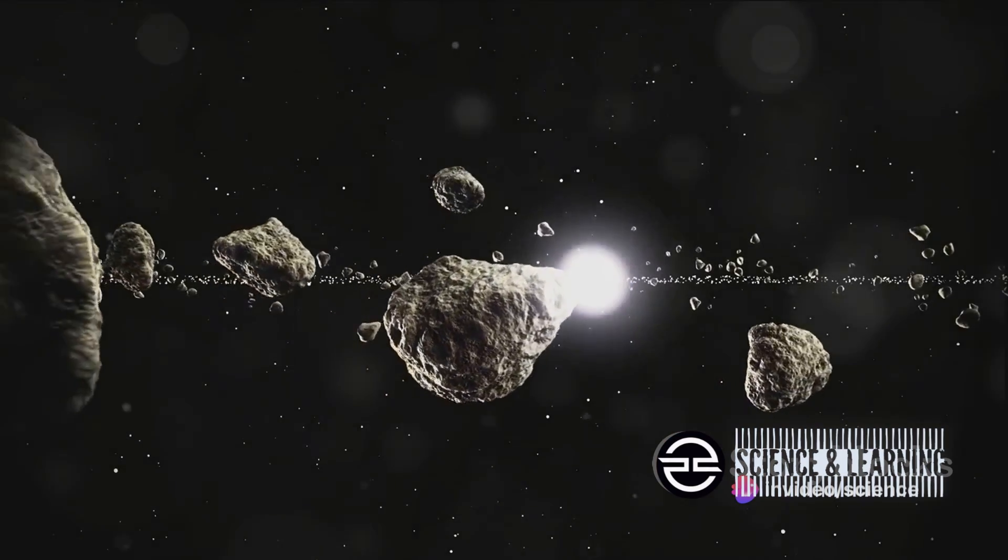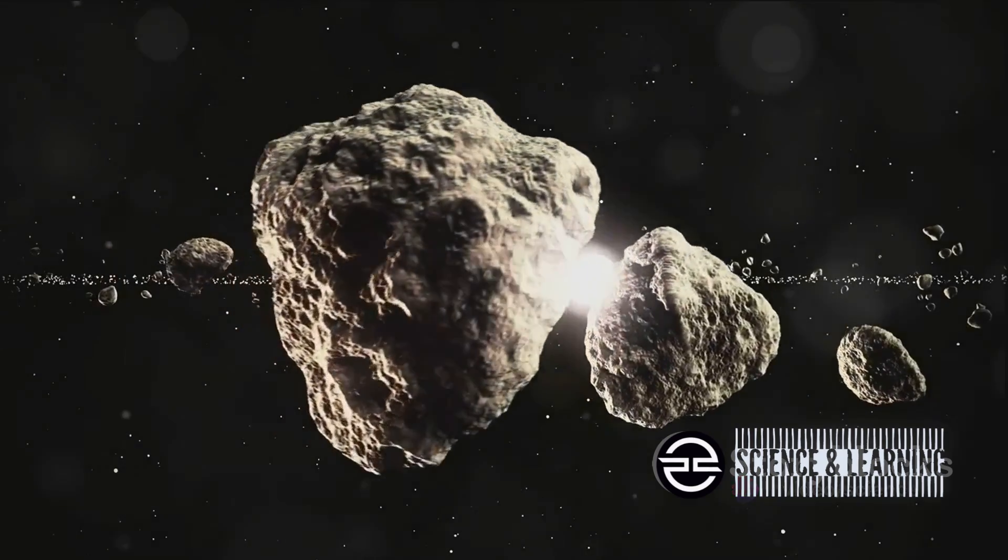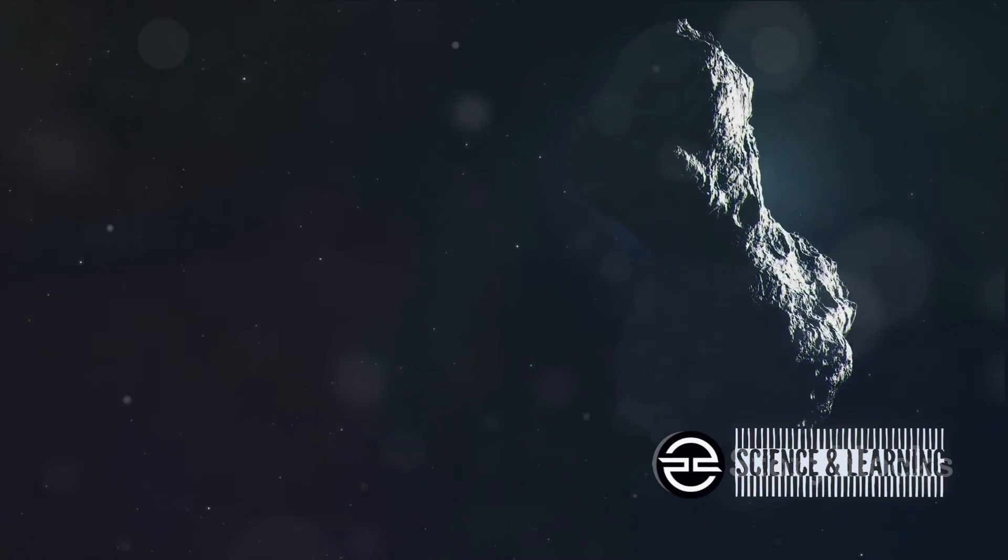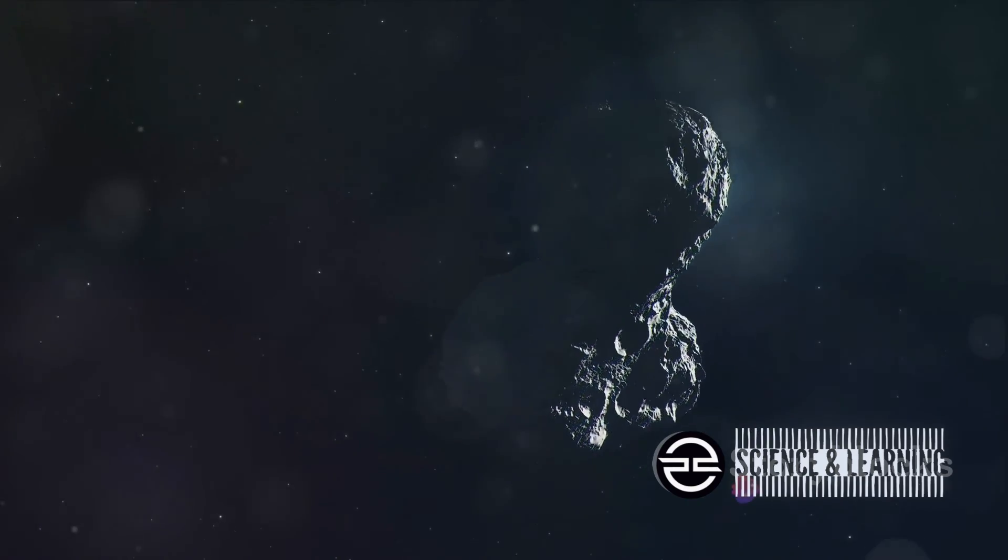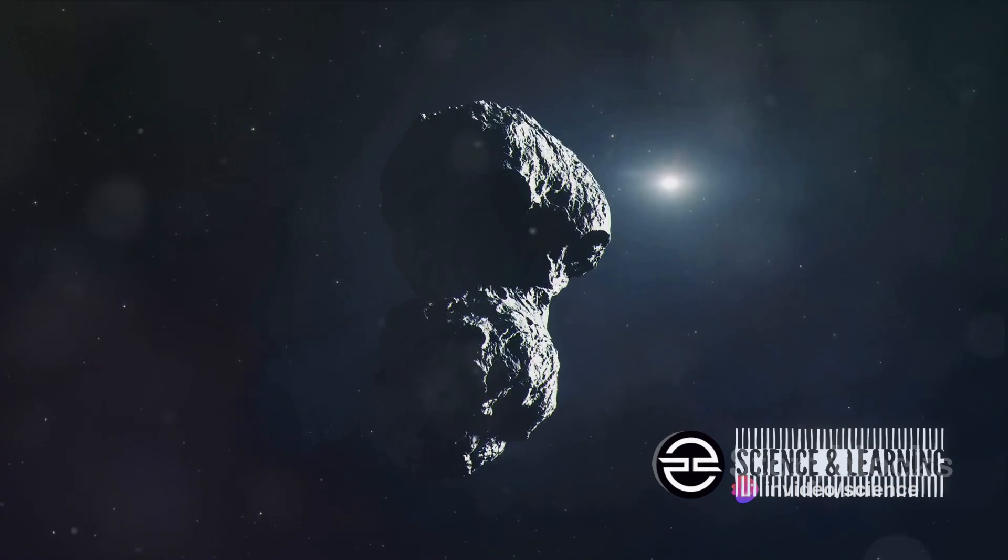The trajectory of this comet is another aspect that makes it unusual. It's on an elliptical orbit, swinging in close to the sun before being flung back out into the depths of the solar system. This dance with the sun is what makes the Mother of Dragons visible from our home planet.